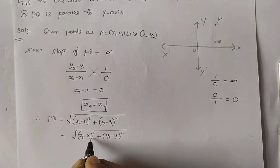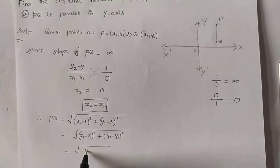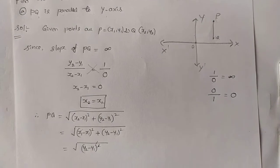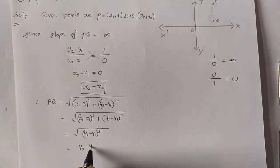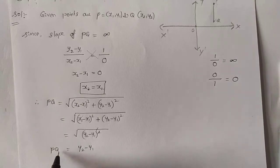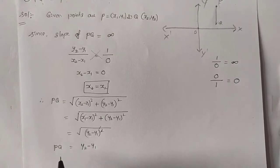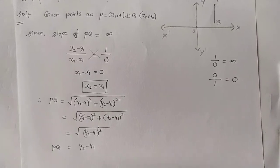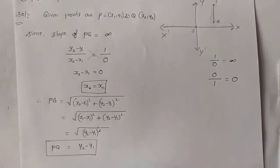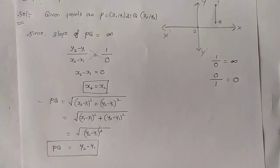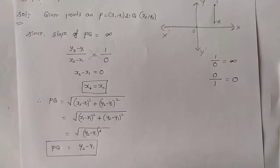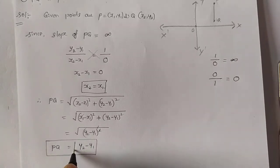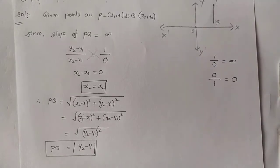Since x1 equals x2, x1 minus x1 will get cancelled — 0 whole square will come. That equals the square root of (y2 minus y1) whole square. The square root gets cancelled. Finally, we get y2 minus y1. Therefore the distance between P and Q when PQ is parallel to y-axis is y2 minus y1. Since distance should always be positive, we use modulus: |y2 minus y1|.